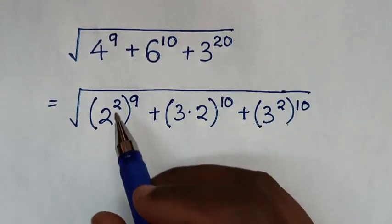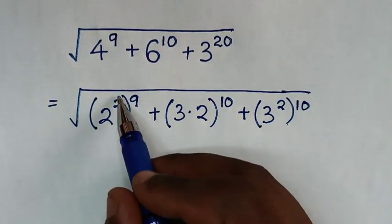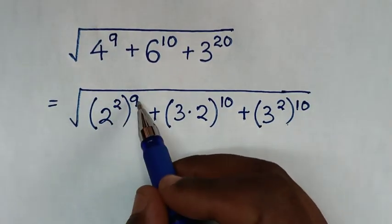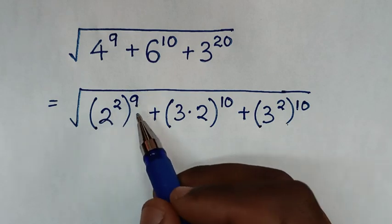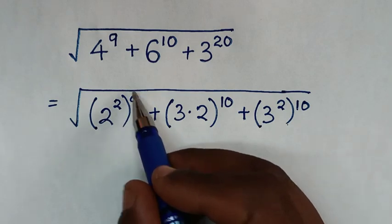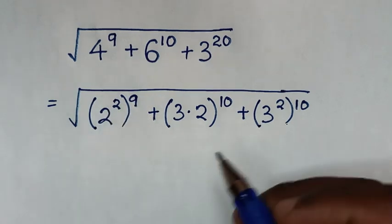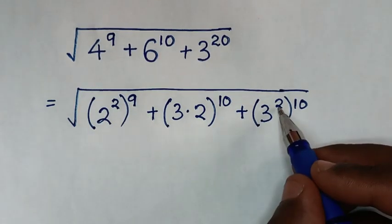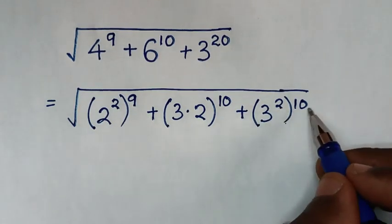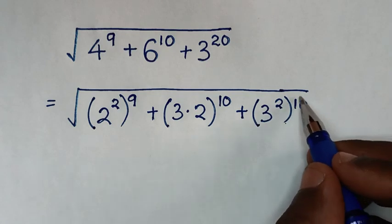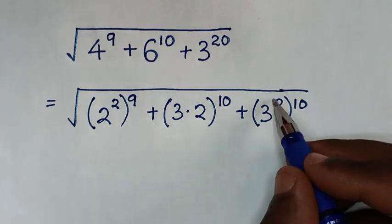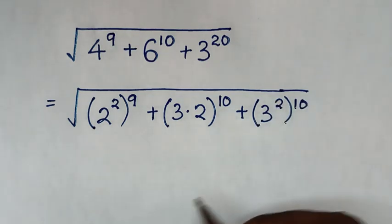In the next step, in this power of 2, we take it outside the bracket and the power of 9 inside. Also here, the power of 2 we take outside and the power of 10 we take inside.